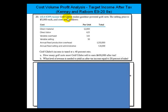Golf Glider makes gasoline-powered golf carts. The selling price is $5,000 each, and costs are as follows.